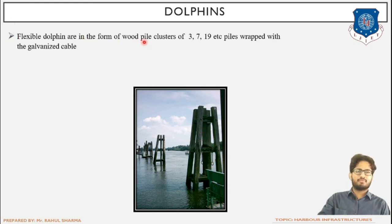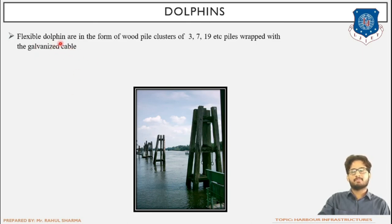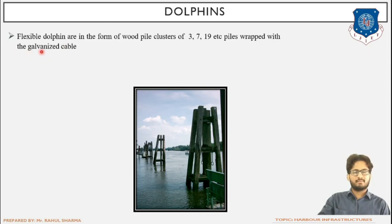Flexible dolphins are in the form of wood pile clusters of typically 7 to 19 wooden members tied together. They are wrapped with galvanized cable. The use of galvanized cable ensures that rusting or corrosion of the cable does not take place. The wire or rope used to tie the wooden members together is galvanized to make sure it does not get corroded, because if it corrodes, its strength will reduce and it will not be able to hold the bunch of wooden piles together.